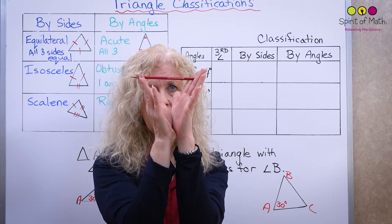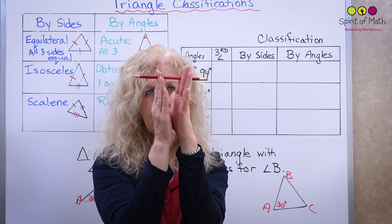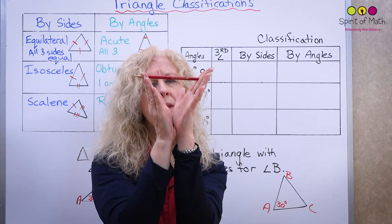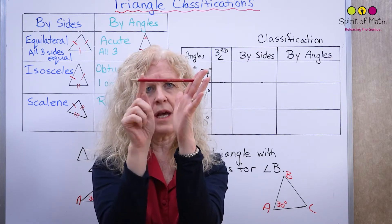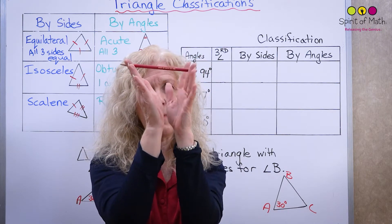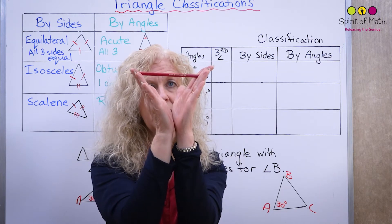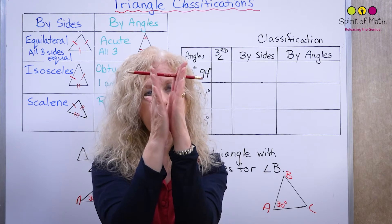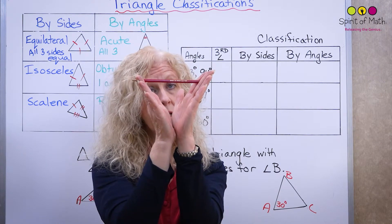And if that side gets larger, the angle gets larger too. The length of a side affects the angle in the opposite direction facing it — if this is a very small side, that would be a very small angle, and if it's a very large side, it would be a very large angle.